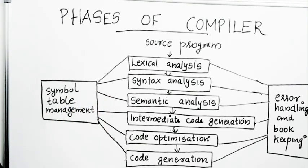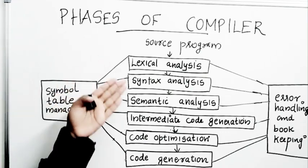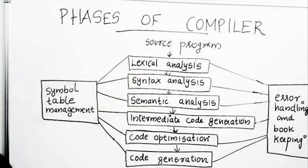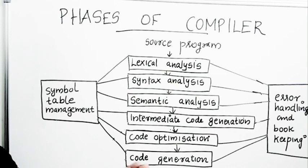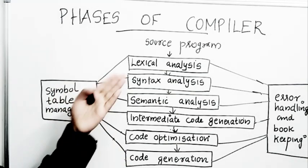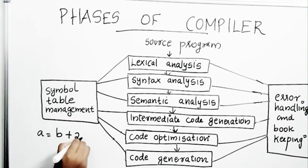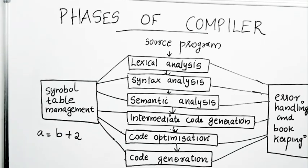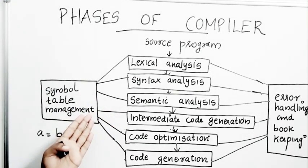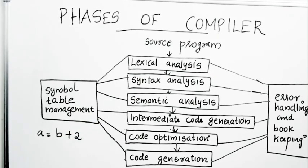The very first phase is lexical analysis. The input to the compiler is a source program and the output is a target code, which can be a high level program or a machine code. If the source program contains a statement like 'a = b1 + 2', the lexical analyzer breaks the program down into meaningful units called tokens.